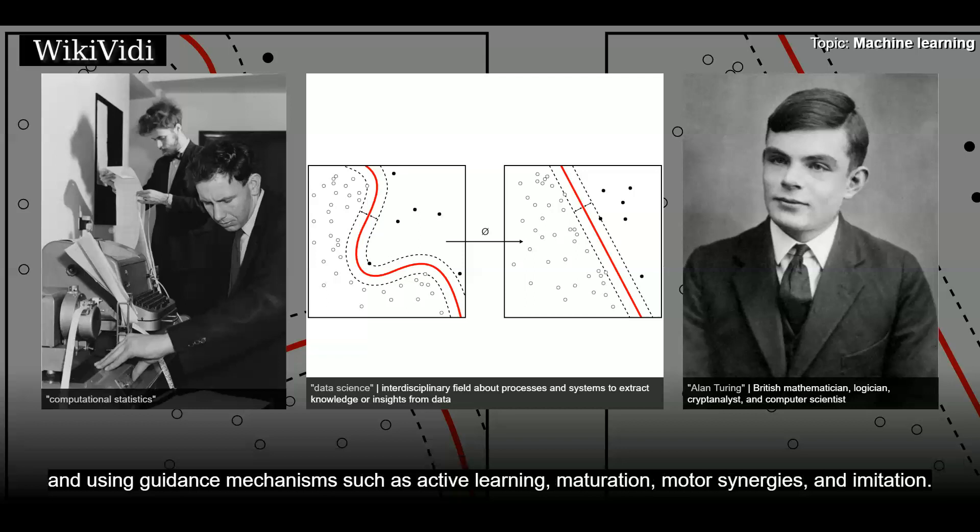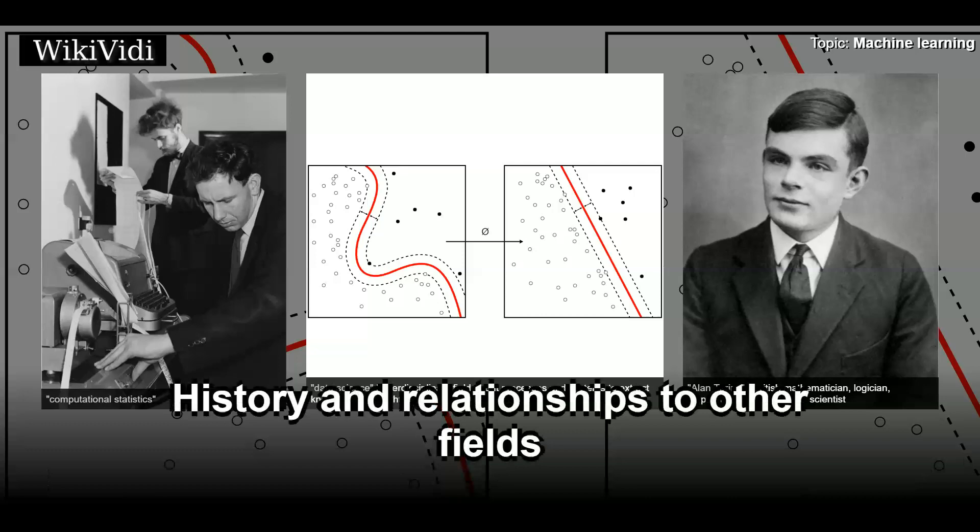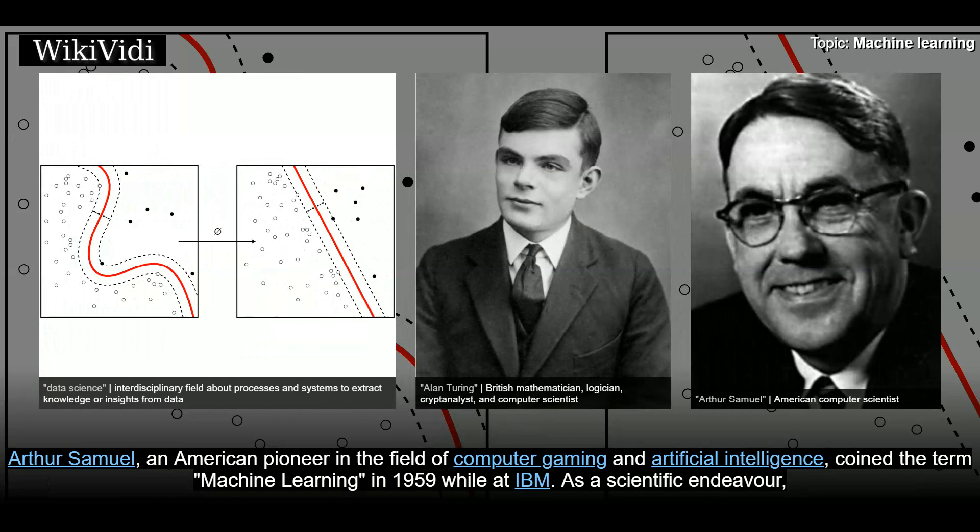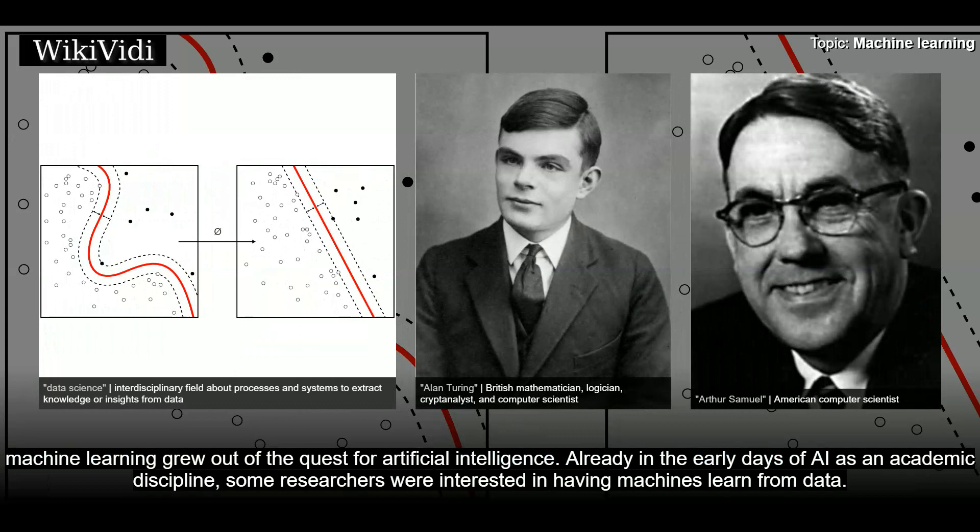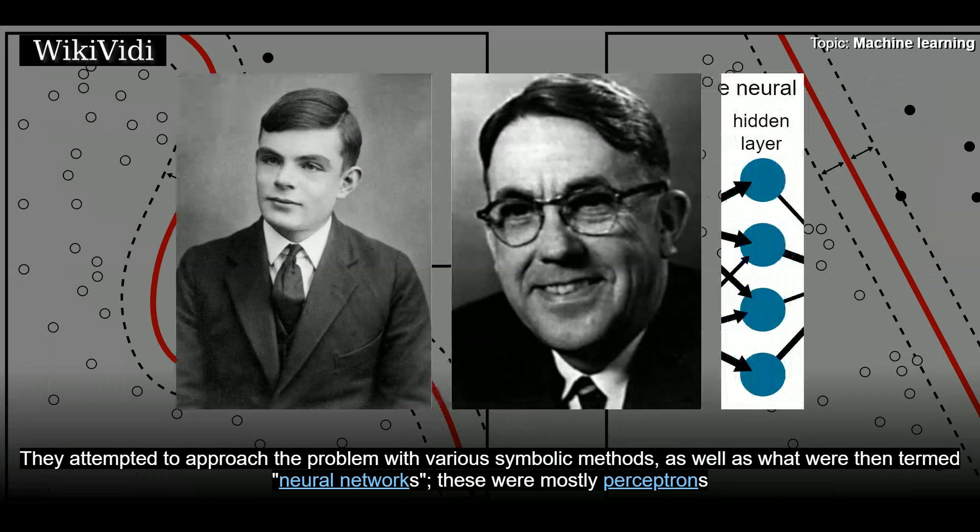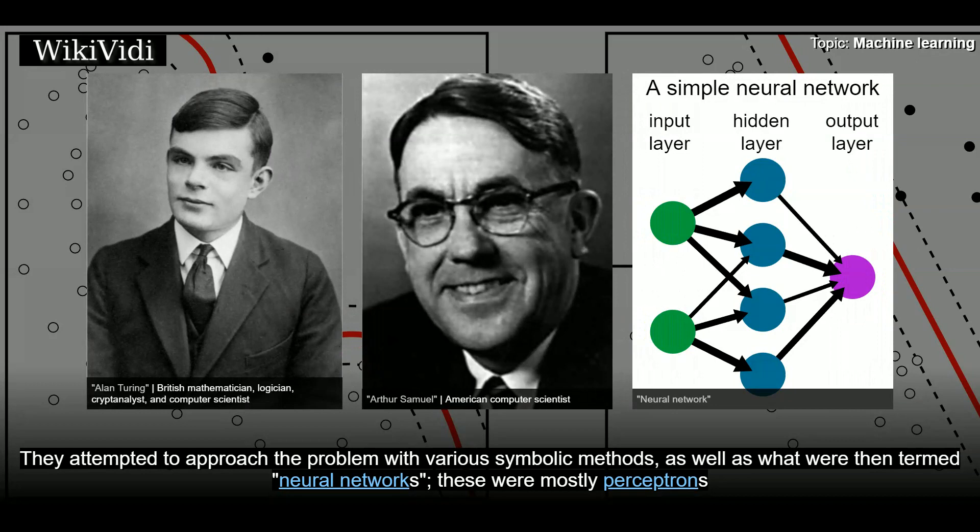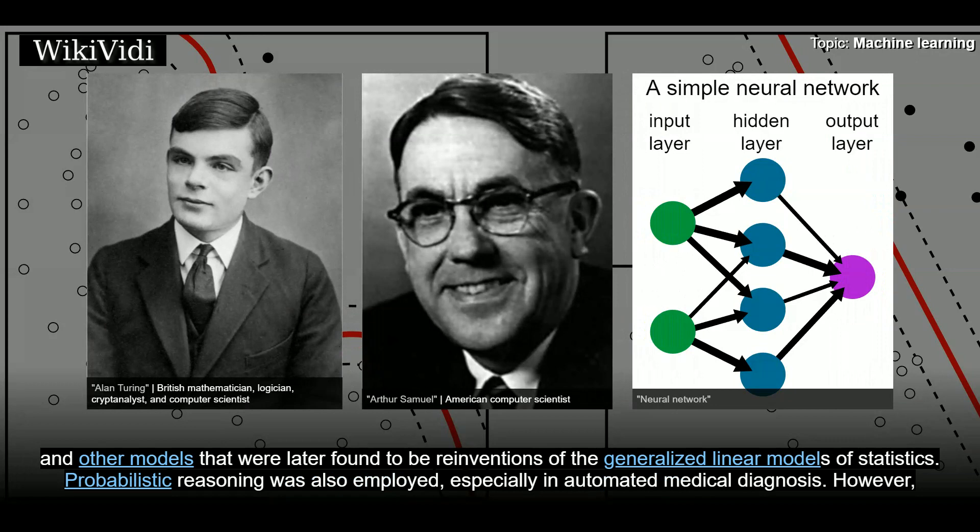History and relationships to other fields. Arthur Samuel, an American pioneer in the field of computer gaming and artificial intelligence, coined the term machine learning in 1959 while at IBM, as a scientific endeavor. Machine learning grew out of the quest for artificial intelligence. Already in the early days of AI as an academic discipline, some researchers were interested in having machines learn from data. They attempted to approach the problem with various symbolic methods, as well as what were then termed neural networks. These were mostly perceptrons, and other models that were later found to be reinventions of the generalized linear models of statistics.